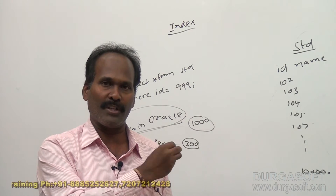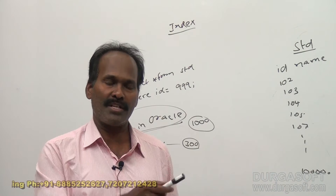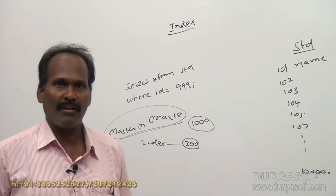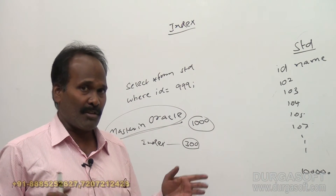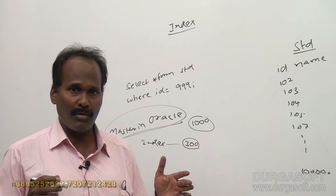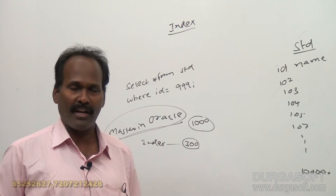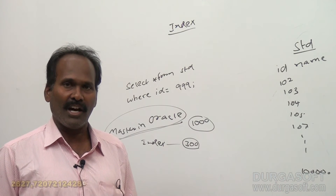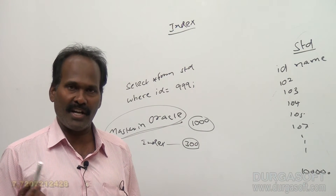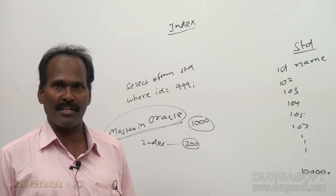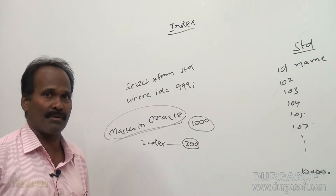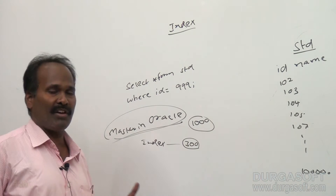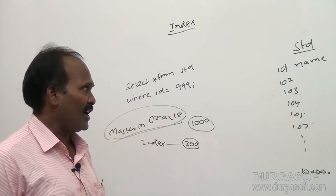If index is there, directly you open the index page, find the corresponding page number on the right-hand side, and immediately open that page. Without index, search becomes very terrible, very horrible, and takes a lot of time. To overcome that, every book has an index page.